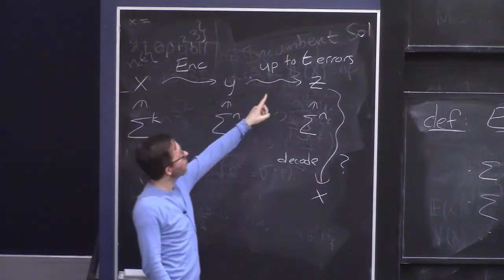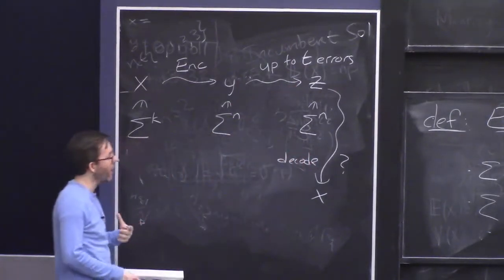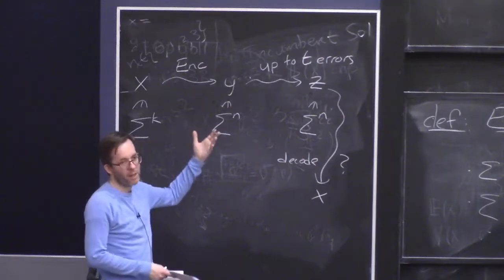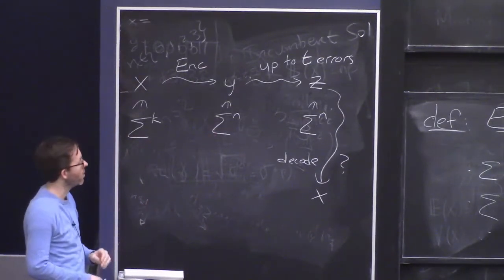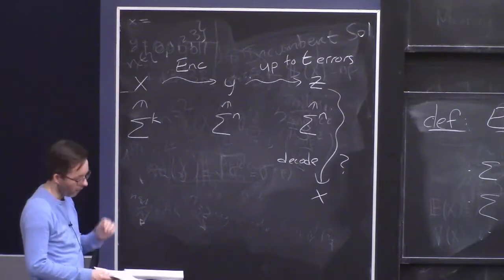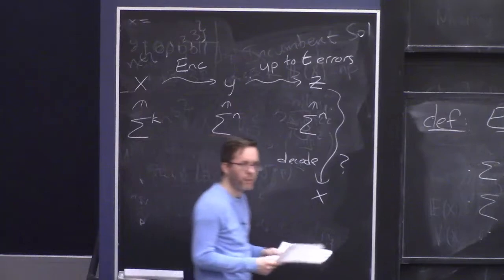And as I said, we're also going to work in this worst-case model of errors. So we're going to have some fixed bound T, and we're going to imagine that always, at most, up to T errors could get corrupted. And an adversary could corrupt them in the worst possible way to try to fool everybody. Any questions about this?